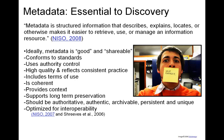For digital objects, good and shareable metadata includes rights or terms of use. Good and shareable metadata is coherent, meaning the metadata makes sense at a glance with no packing of multiple values into a single element. It also provides context, meaning if the metadata is removed from its local environment, you can still make sense of it. Good and shareable metadata supports long-term preservation, is authoritative, authentic, archivable, persistent, and unique, and ideally it's optimized for interoperability.